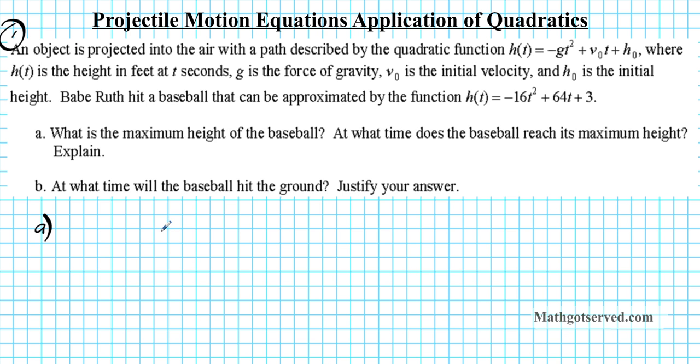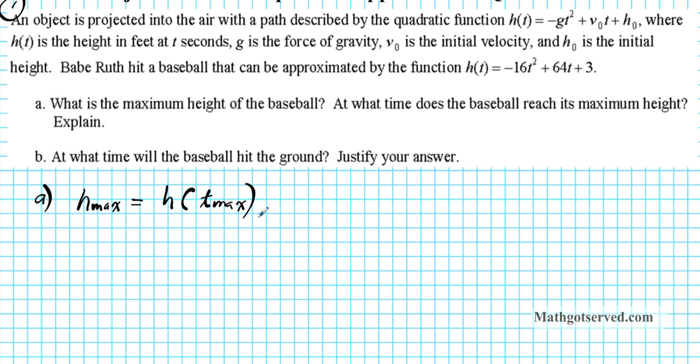It says what is the maximum height of the baseball? So h max can be found by evaluating h at t max. t max is the time at which the ball achieves maximum height. So how do we find t max? t max is the same thing as the x coordinate of the vertex of a quadratic function. So what is the formula for finding the x coordinate of the vertex? Use negative b over 2a.